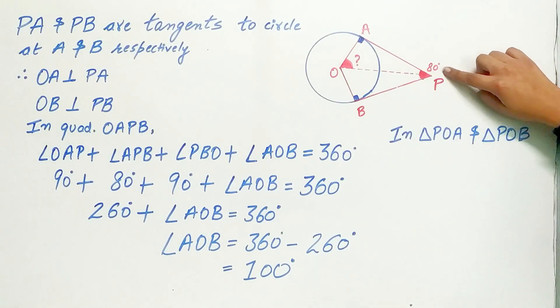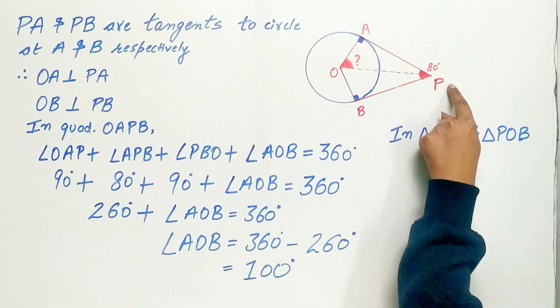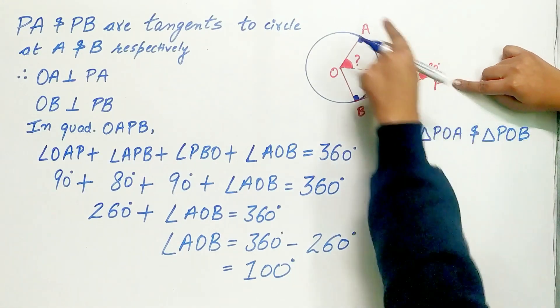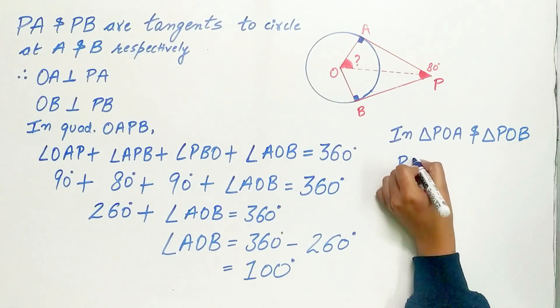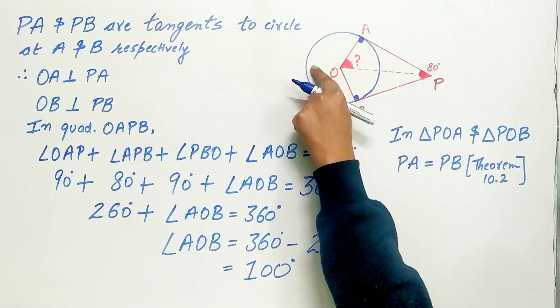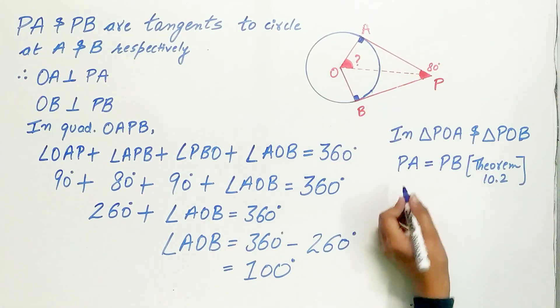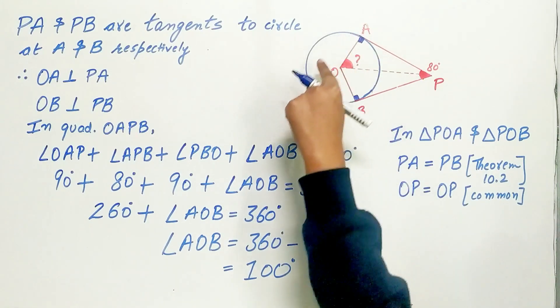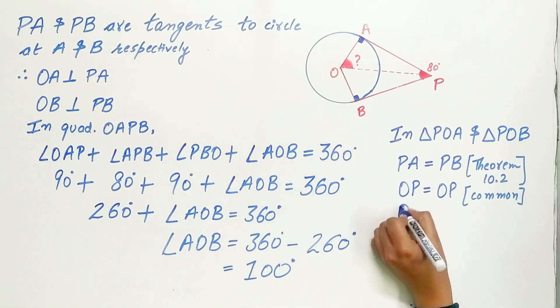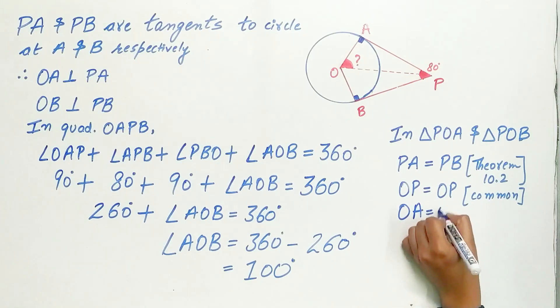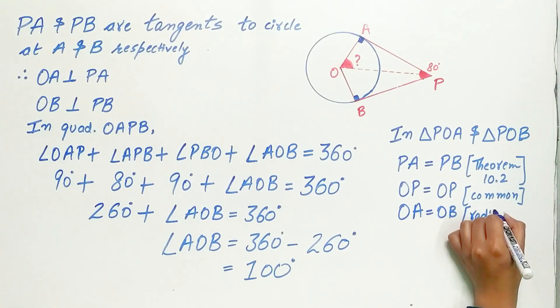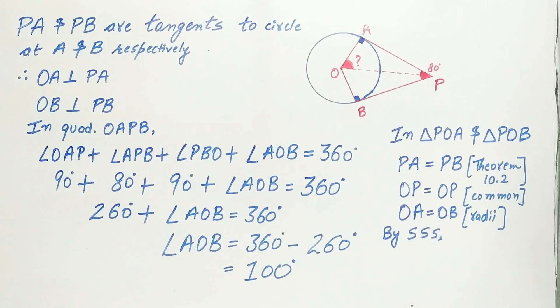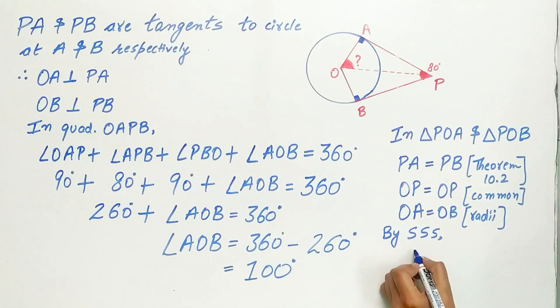Now, in triangle POA and triangle POB, PA is equal to PB via theorem 10.2. OP is common in both the triangles and OA is equal to OB because they are radius of circle. By SSS, both the triangles are congruent.